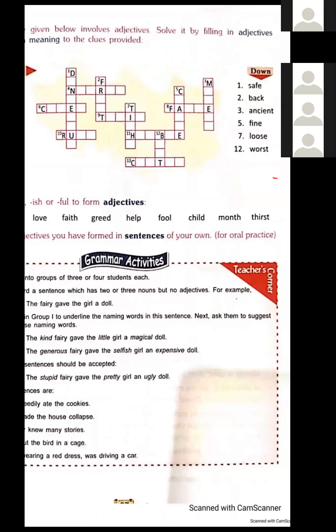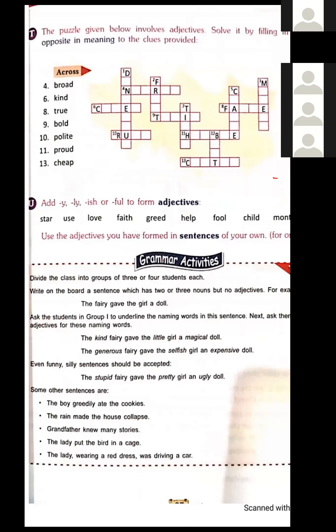One more part: add Y, LY, ISH, or FUL to form adjectives. For example, use plus FUL gives useful; love plus LY gives lovely. I think you can do this part yourself. Now we are going to unmute all of you so that you can ask any question if you want.